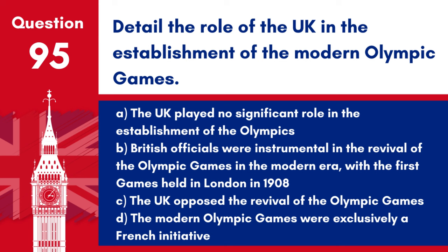Question 95: Detail the role of the UK in the establishment of the modern Olympic Games. British officials were instrumental in the revival of the Olympic Games in the modern era, with the first games held in London in 1908. The UK's contribution to the Olympics reflects its broader influence on global sports and culture.